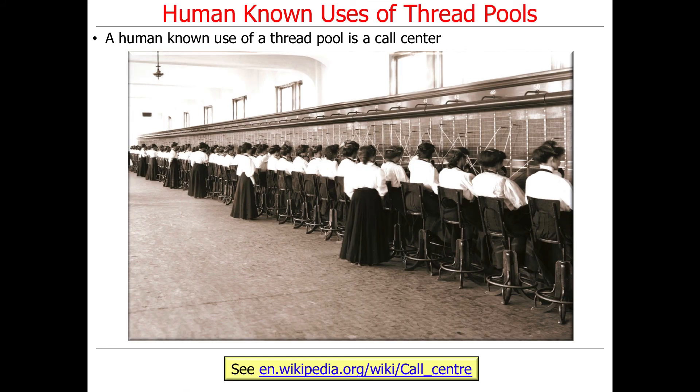What's the human known use of thread pools? My favorite example is a call center. You call up — you're having problems with your tax returns, you want to book a flight, you're having problems with your credit card — whatever it is, you call the IRS. They have a long queue when you do that. There's a bunch of operators standing by — they basically have a pool of operators. Every time you make a call to a call center, they don't run out into the street and grab someone to answer the phone. They have a fixed size pool, maybe 20 people. Anybody beyond the 20 people goes into a queue, and then you get the little hold music playing. So that's a good example of a human known use of a thread pool: a call center.